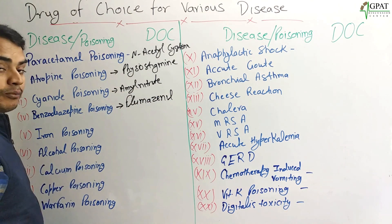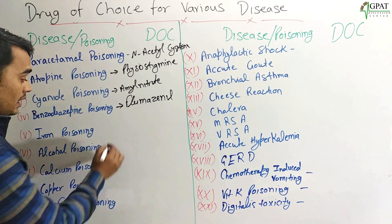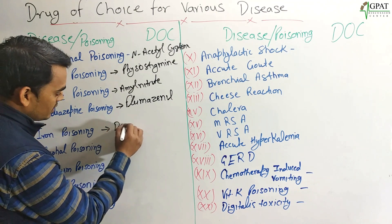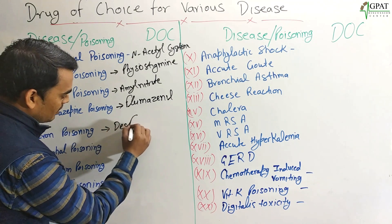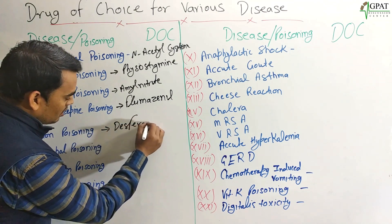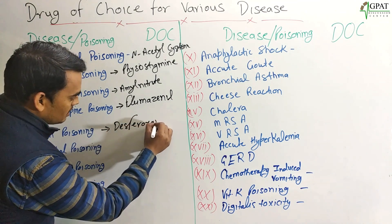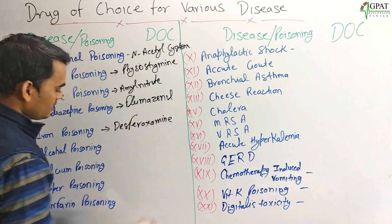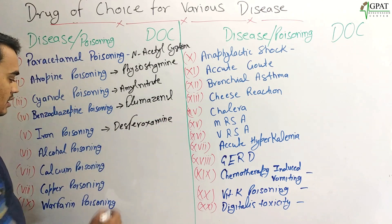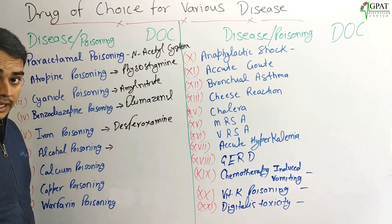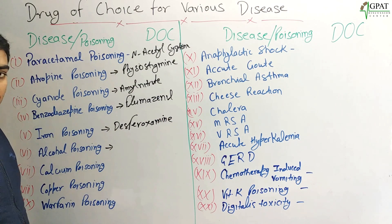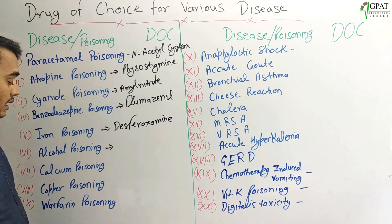Next: Iron poisoning. For iron poisoning, Desferoxamine is the drug of choice.